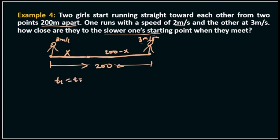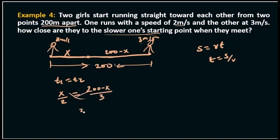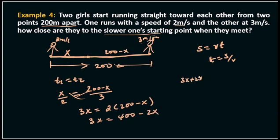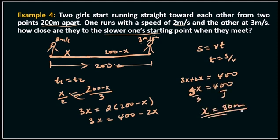Setting t1 equal to t2, and using s equals v times t, so t equals s over v. Let x be the distance from the slower runner's start. Then x over 2 equals (200 minus x) over 3. Cross-multiplying: 3x equals 400 minus 2x, so 5x equals 400, giving x equals 80 meters.